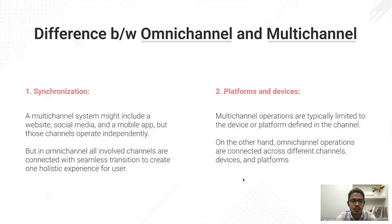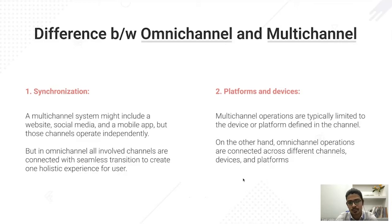There is also a term called multi-channel, and there's a difference between multi-channel and omni-channel. The first difference is synchronization. In multi-channel, different channels like a website, social media, and mobile application all operate independently — each has a specific context of use and they are not interconnected. In omni-channel, every channel a brand has is interconnected, so users can seamlessly switch between them.